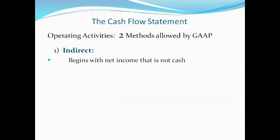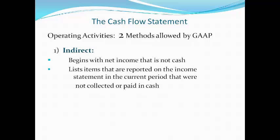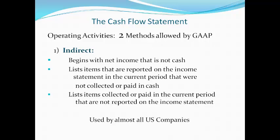GAAP allows two different options for preparing the operating activities section of the cash flow statement. The indirect method begins with net income, which is not cash. It then lists items reported on the income statement in the current period that were not collected or paid in cash, and items collected or paid in the current period that are not reported on the income statement. Both of these are differences between net income and cash. The indirect method statement is used by almost all U.S. companies.